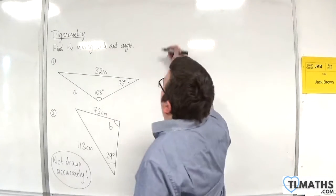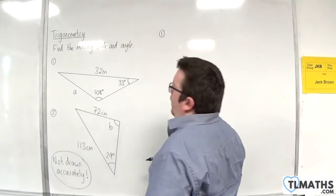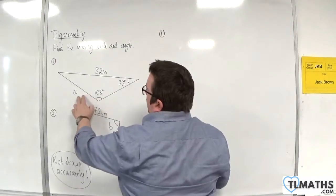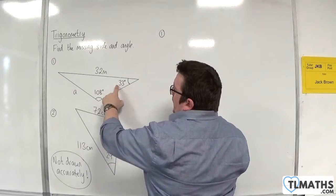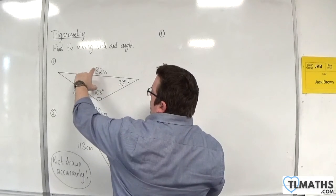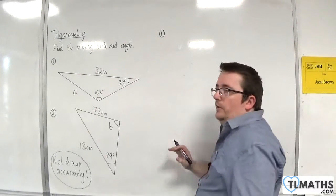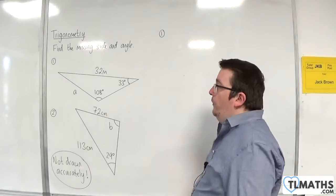For number one, we have the missing side and its opposite angle, and we've also got the information of a side and its opposite angle. So that should allow us to use the sine rule.